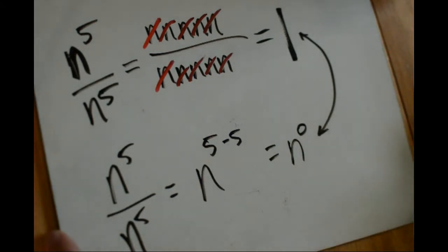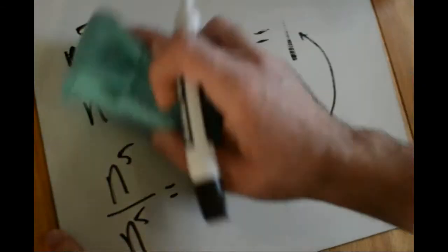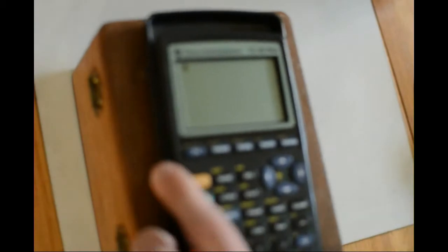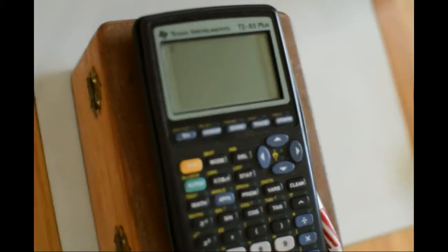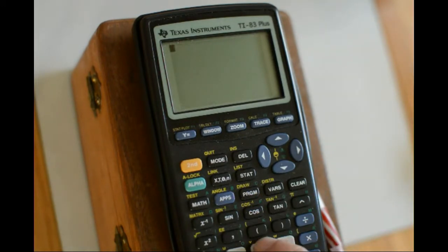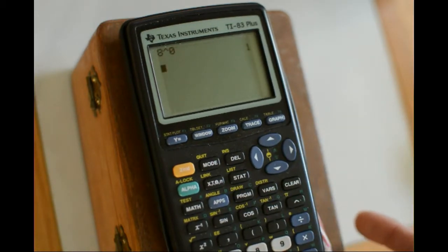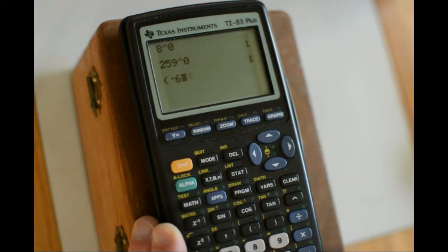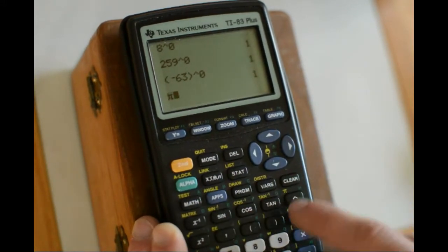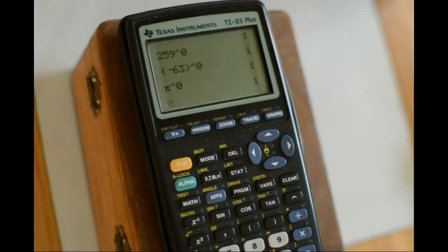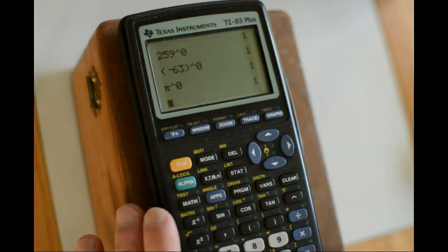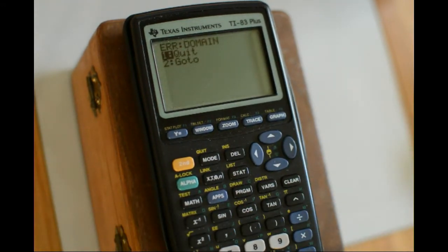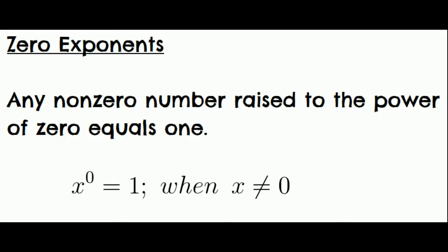What this illustrates is that any number raised to the zero power equals one. You can try this out on a calculator too. Here's eight raised to the zero power — it's just one. Here's 259 raised to the zero — it's just one. Negative 63 raised to the zero is one, and pi raised to the zero is one. Pretty much anything raised to the zero power is one, with only one exception: zero raised to the zero power is undefined. So our rule is that any non-zero number raised to the power of zero equals one — x to the zero equals one, as long as x itself is not equal to zero.